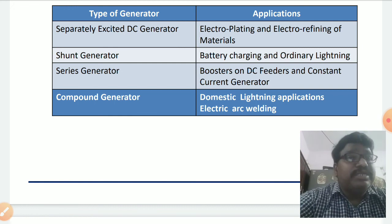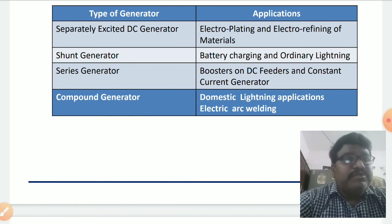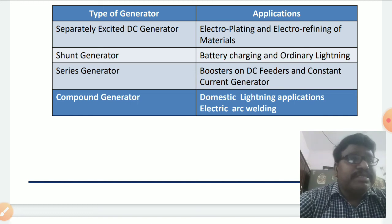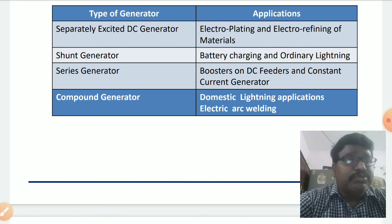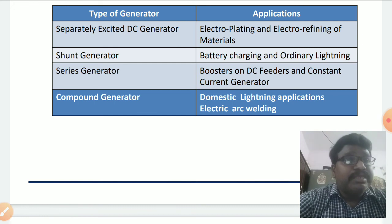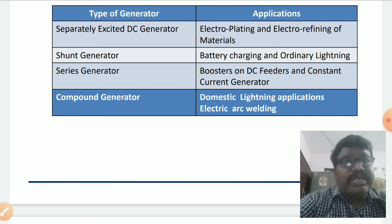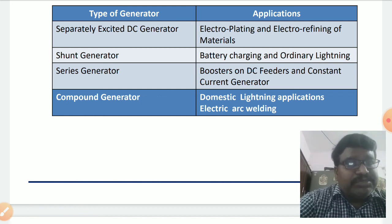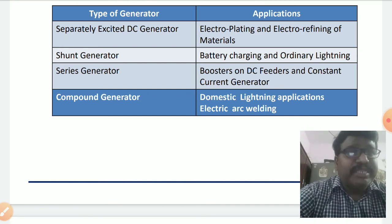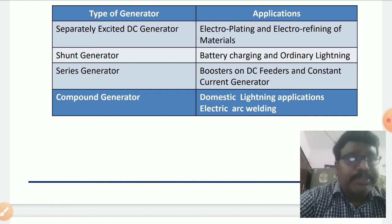The cumulatively compound generator generates rated voltage with only a slight variation, and is majorly used in domestic lighting applications. The differentially compound generator, where series field flux and shunt field flux are in opposite directions, is used for electric arc welding, as it supplies constant current for welding applications. These are the various applications of DC generators.